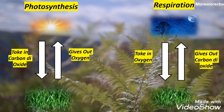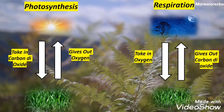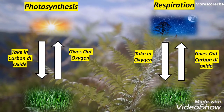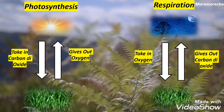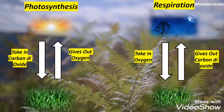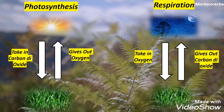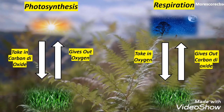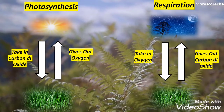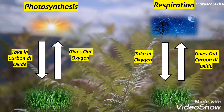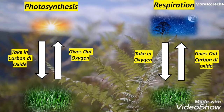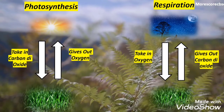Next, an interesting question: what happens during day and night in plants? During the day there is sunlight, so plants take in carbon dioxide and release oxygen through photosynthesis. But at night there is no sunlight, so plants take in oxygen and release carbon dioxide. This is called the respiration process.